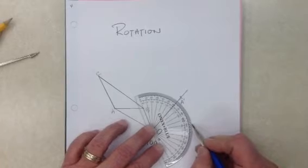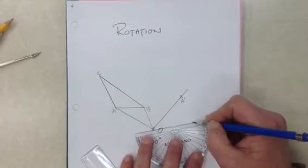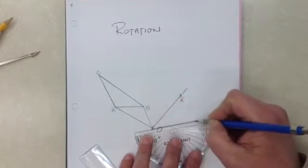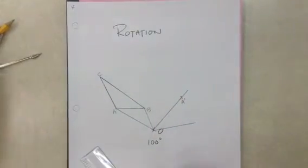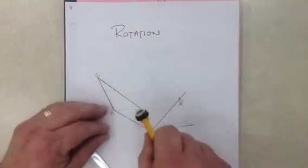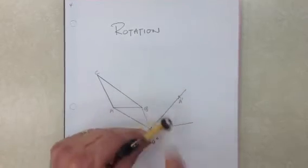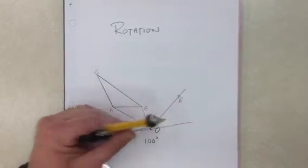I measure 100 degrees, and my new B, I'm completing the 100 degree. B prime is going to be on that line, where exactly it has to be the exact same length as the line from O to B. That's the measurement of O to B, so there is my new B prime.